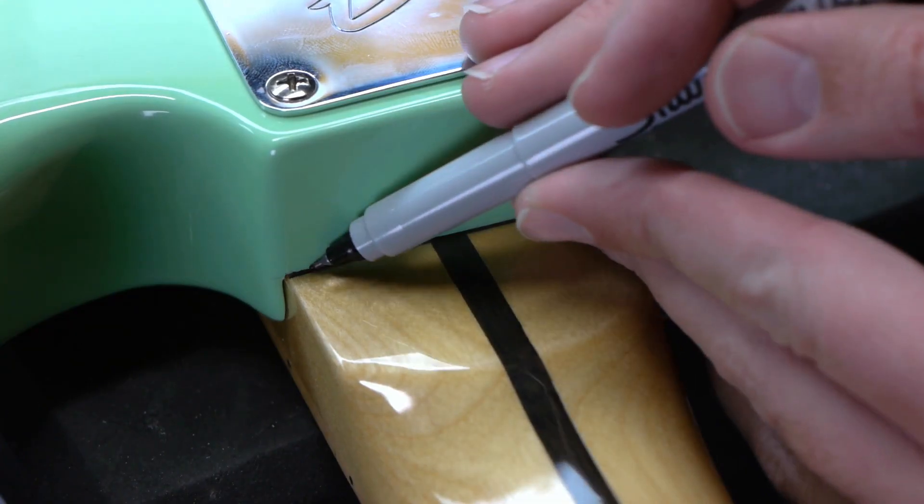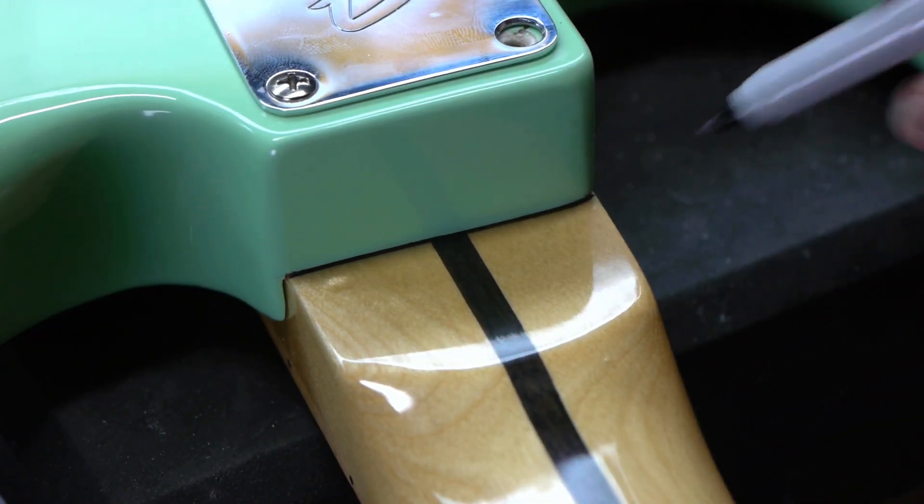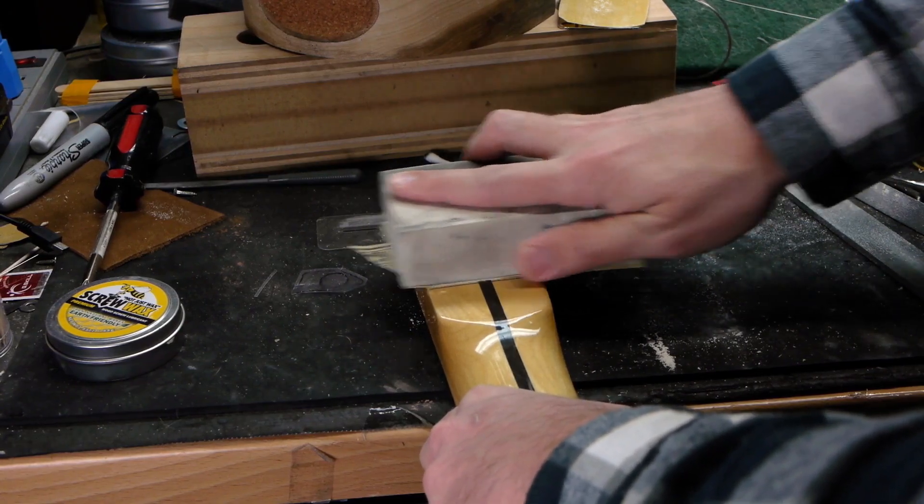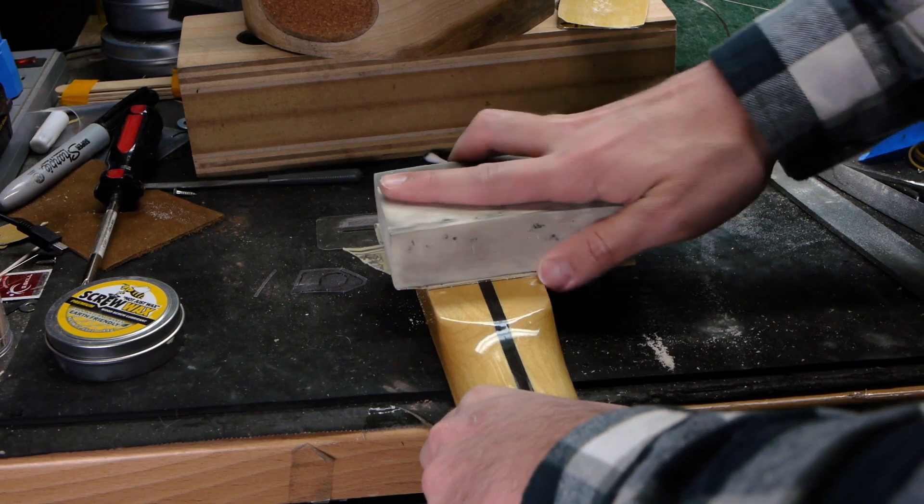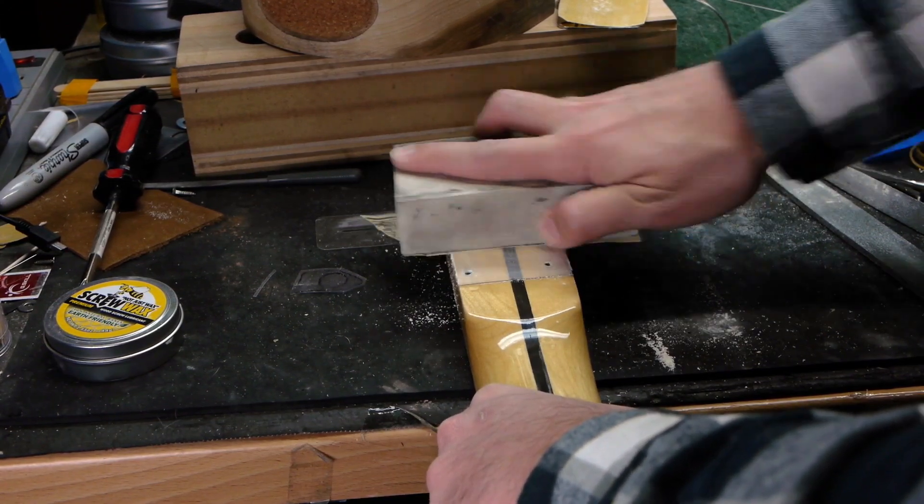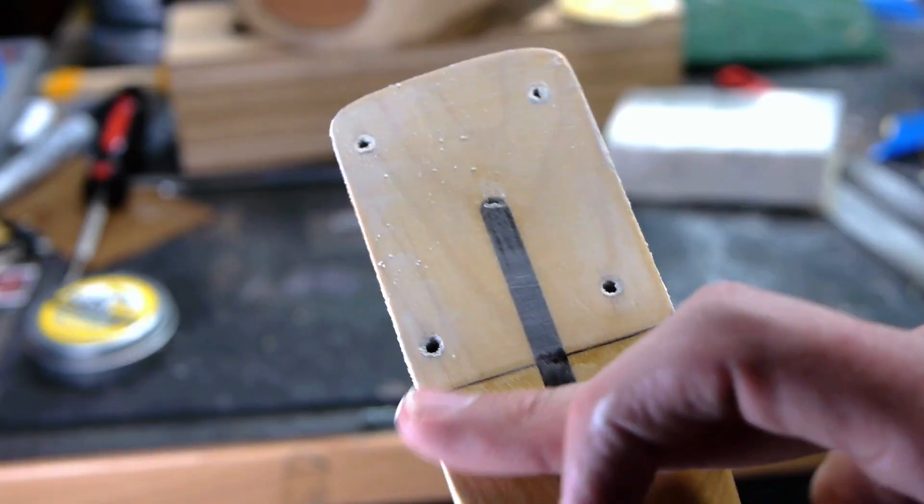I reattached it to the body, then used a fine tip Sharpie marker to draw a line on the heel of the neck right where it meets the neck pocket. Then I carefully used a sanding block to sand the neck heel flat right to that Sharpie line. With thick poly finishes, you can always wet sand and buff if you accidentally scuff anything, but be as careful as possible.